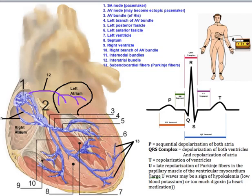The conduction system is made of modified cardiac muscle — the bluish purple fibers we see on the heart are not neurons; they're actually modified cardiac muscle. However, this modified cardiac muscle does not contract; instead, it generates and conducts action potentials through the heart.